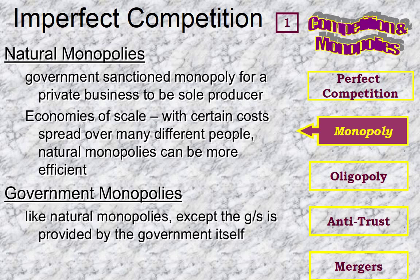The first one we're going to talk about is what is a natural monopoly. This is where a government entity, like the federal government, decides that there's only going to be one or two producers or suppliers of a particular good or service. This is based entirely on the concept of economies of scale, where certain costs being spread over many different people can be efficient even though we're lacking in competition.